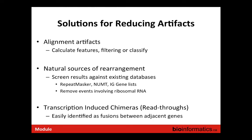To reduce these artifacts: for alignment artifacts, features of the supporting alignments are calculated and hard filtering or machine learning is used to classify predictions as true or false. For natural sources of rearrangement, relevant databases such as gene lists of IG genes are used to annotate and filter. Transcription-induced chimeras or read-throughs can be easily identified as events involving adjacent genes.